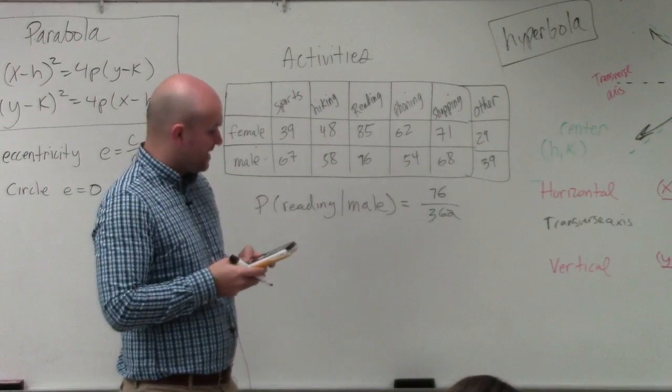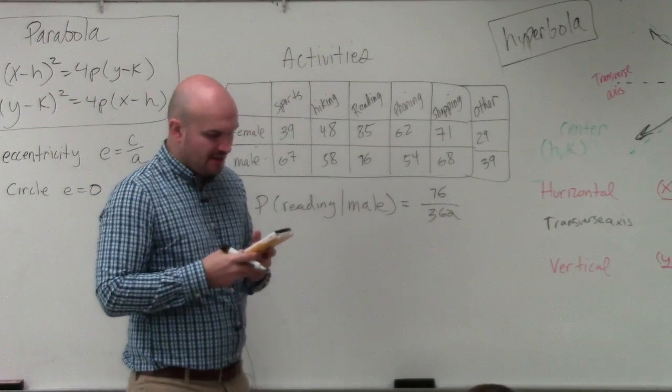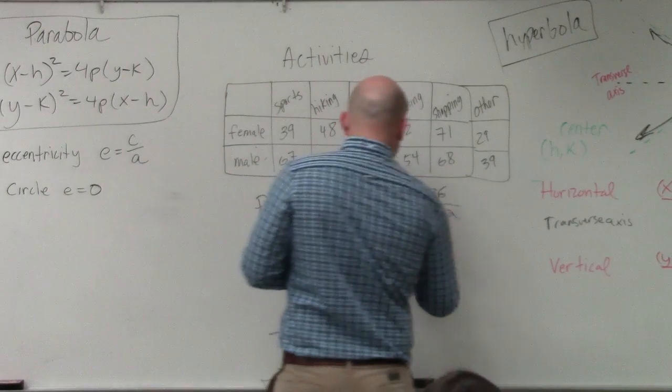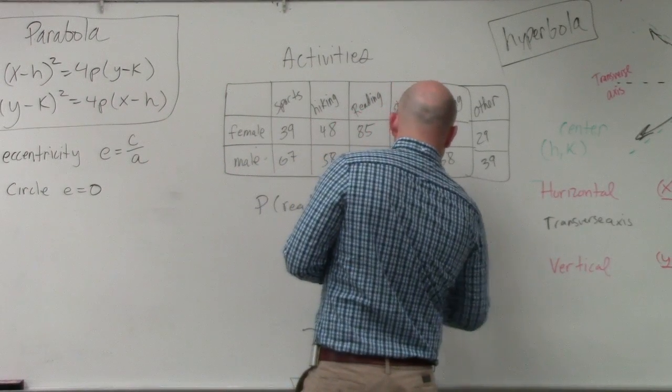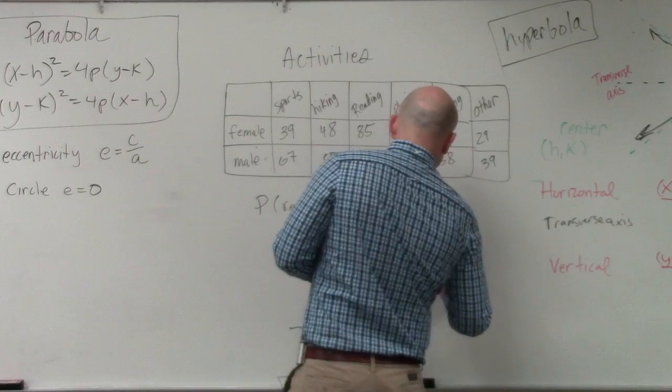So therefore, it's 76 divided by 362, and I get 0.209, which I'll round to 21%.